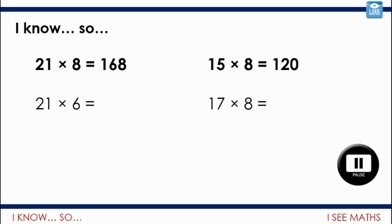Okay, well, let's have a look. 21 multiplied by 8 is 168. 21 multiplied by 6? Well, it will be 2 fewer 21's. So, it will be 42 less. So, that will be 126.